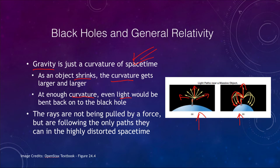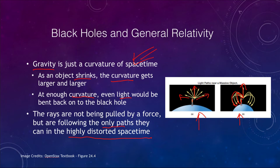Remember that unlike under Newton, there is no force involved here. There is no gravitational force pulling on these light rays — it is the light rays following the only path they can in this highly distorted space and time. As that object compresses down towards a black hole, it gets really very, very distorted.